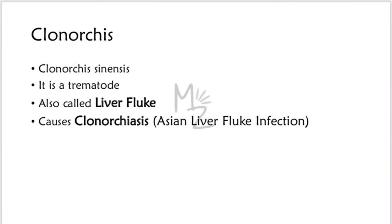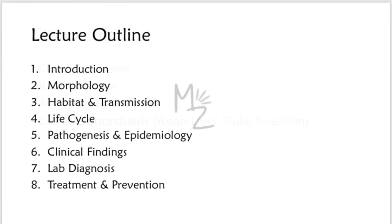Its full name is Clonorchis sinensis. It is a trematode — I have a detailed video on trematodes, find its link in the description or in the top right corner. It is also called the liver fluke because it lives in biliary ducts, which are those ducts that drain bile from the gallbladder situated just under the liver. It is responsible for causing Clonorchiasis, also called Asian liver fluke infection.